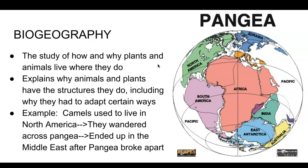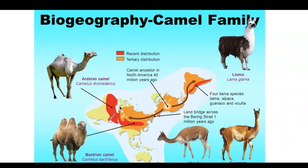For example, camels used to live in North America. They wandered across Pangea and ended up in the Middle East after Pangea broke apart. Here's a picture showing where North America was during the time of Pangea, and you can see they walked across the continents into the Middle East. If we look at a map of the biogeography of the camel family, we can see their most recent distribution versus their tertiary distribution, showing how they dispersed throughout the continents.